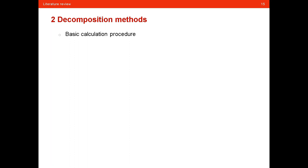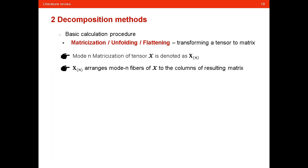Now that we know what a tensor is and some basic descriptions of tensor, we come to the decomposition methods, which are the powerful methods for data analytics in the area of big data. At the very beginning we will cover the basic calculation procedures. The first is matrization, also known as unfolding or flattening. This procedure transforms a tensor to a matrix. Specifically, the mode-n matrization of tensor X is denoted as X_(n) and arranges the mode-n fibers of X as the columns of the resulting matrix.